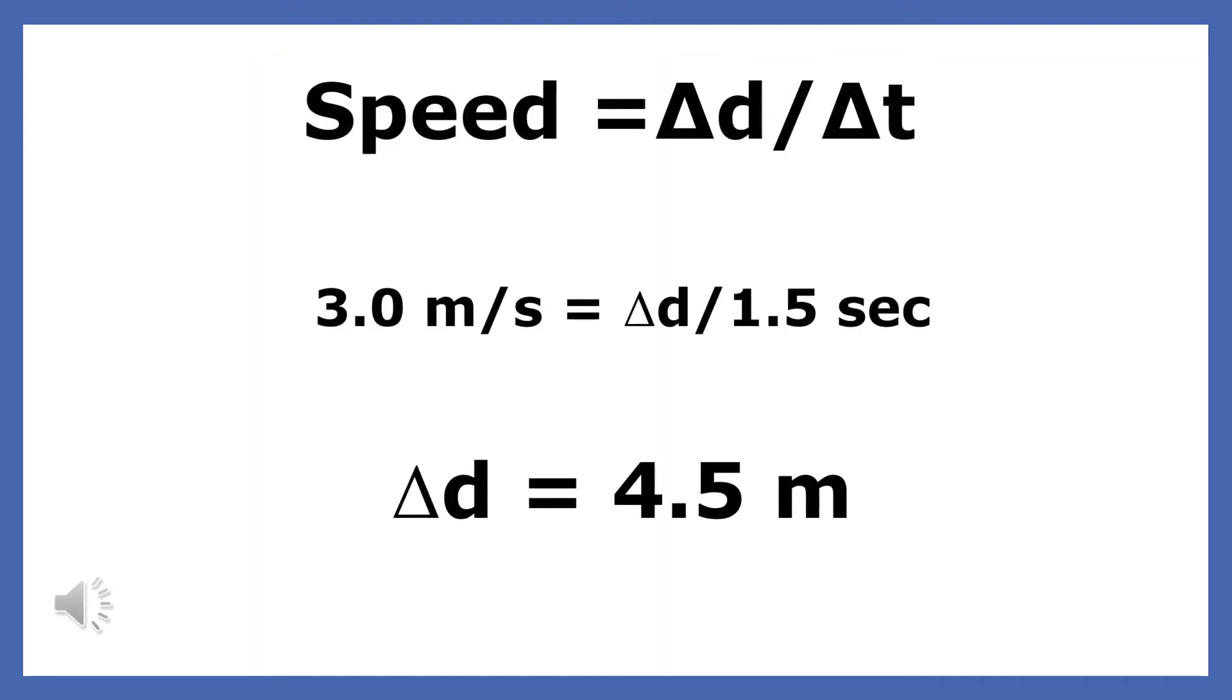We always start by writing the speed equation. We substitute the values we were given and then cross multiply and solve. We get 4.5 meters. Notice that every time I put a number in an equation, I always include a unit. Always include units when you substitute and always include units in your answer.